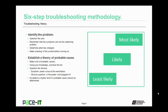From there, you establish a theory of probable causes. You make a list of all of the probable causes. Then, using your technical knowledge, prioritize that list. Your list should have the probable causes listed from most likely to least likely. And by the way, you need to question the obvious — if it's a power issue at the workstation, is the power cord plugged in? Once you have your theory of probable causes, this is where you first consider whether or not you can take care of it or if you need to escalate it to a higher authority.